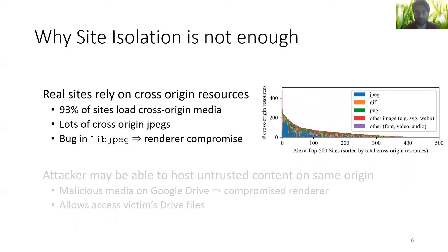There are a couple of reasons for this. First, websites import lots of resources from different origins. In fact, 93% of the Alexa top 500 sites load media — largely jpegs — cross-origin, as we see in this graph. This means that a bug in libjpeg could be exploited by a cross-origin or cross-site attacker.